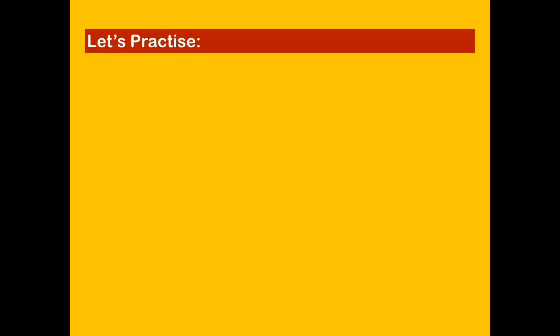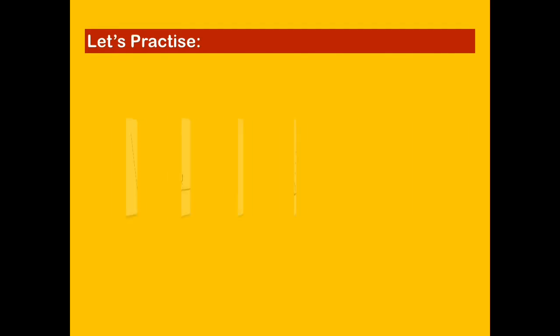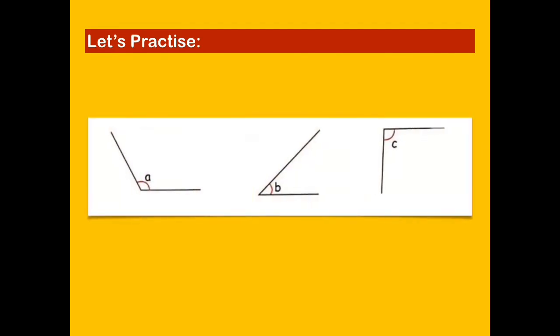Let's practice! Which of the following is an example of a right angle? Correct! Angle C is an example of a right angle.